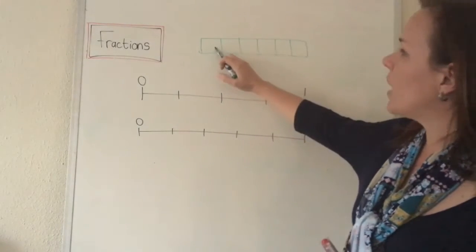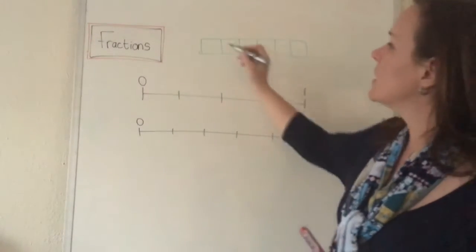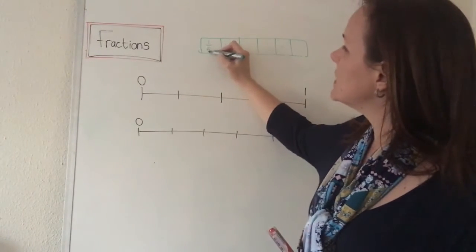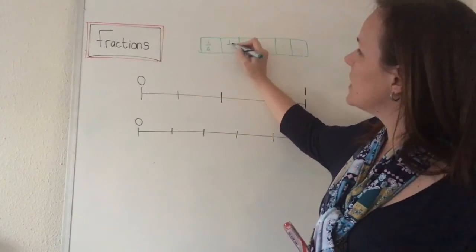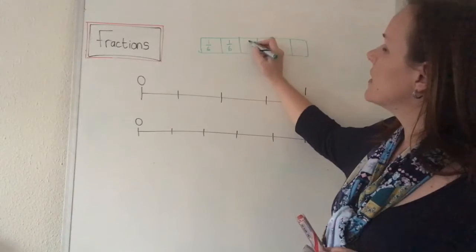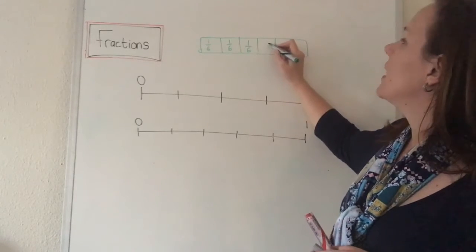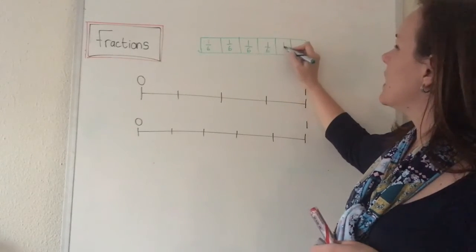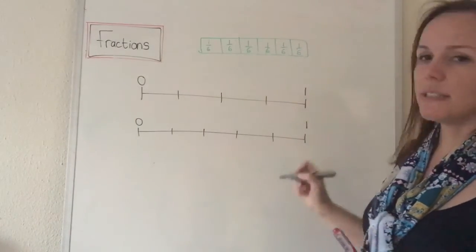So let's count then: one, two, three, four, five, six parts. So this part is one sixth, this one is the second sixth, that is the third one, that is the fourth one, that is the fifth one and that is the last sixth.